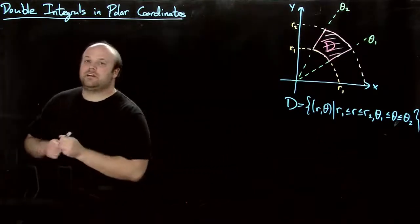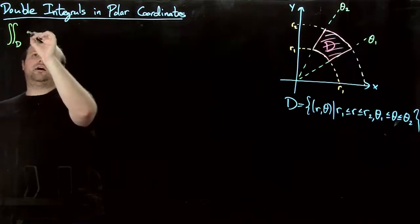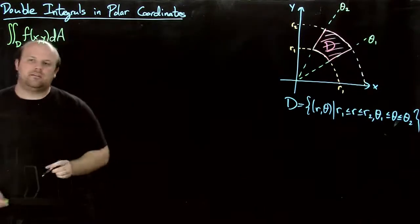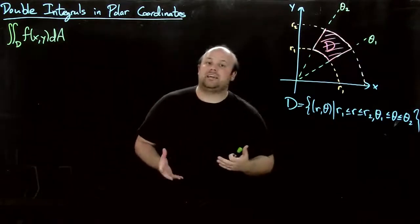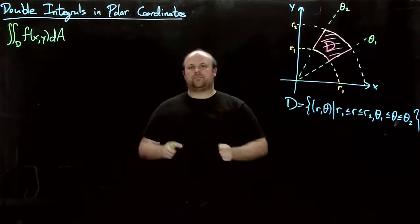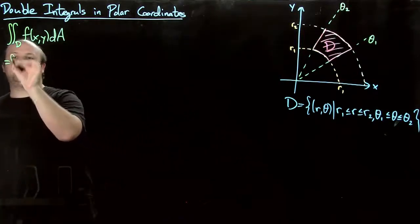Well, if you think of a double integral over d of f of xy dA. And if you think back to where that dA came from, it's the area of a rectangle.